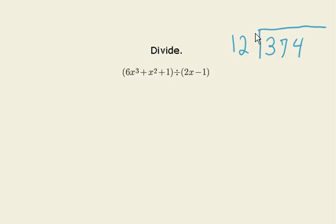If we had this division problem here, we want to take 12 into 374. The first thing we do is we just look at part of the 374, just look at the 37, and say how many times does 12 go into 37? Since we know that 3 times 12 is 36, we say, oh, I can get 12 into 37 three times.